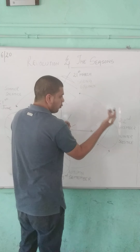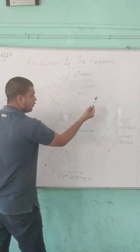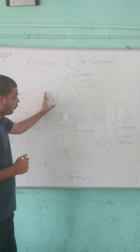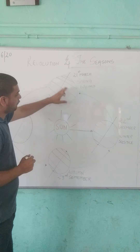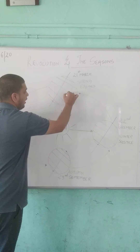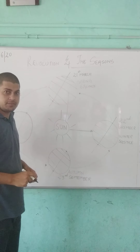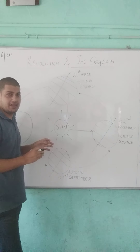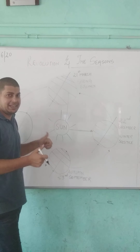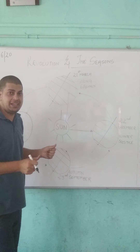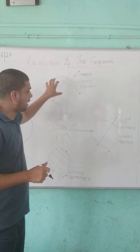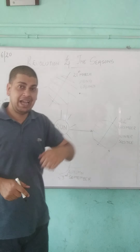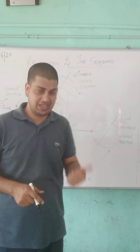When the earth keeps on rotating and revolving, it reaches a location where the sun rays fall directly on the equator. This makes 21st March the day where night and day are both equal. This time is known as the equinox, where day and night are of equal duration.